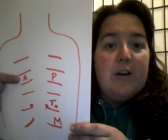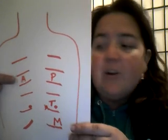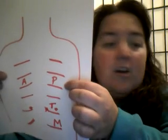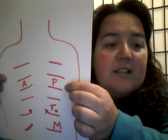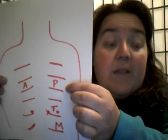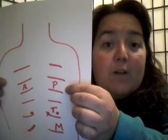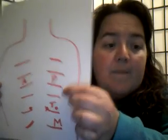As long as you hear your S1, S2 lub-dub, then you're good to move on across directly to the second intercostal space, mid-clavicle on their left side. That would be your P for your pulmonic.